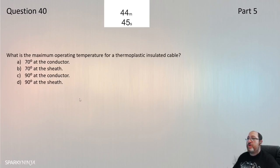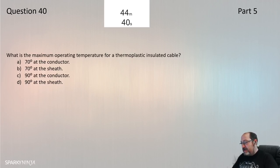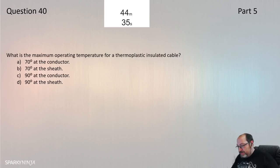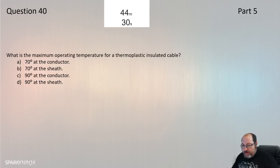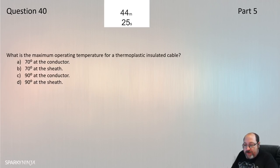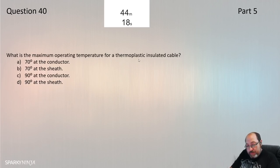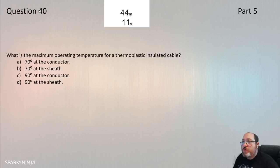Question 40: What is the maximum operating temperature of a thermoplastic insulated cable? This relates to Chapter 52 — selection of wiring systems — Table 52.1: maximum operating temperatures for cable types. For thermoplastic insulated cable, maximum operating temperature is 70°C at the conductor. Question 40 is A — 70°C.